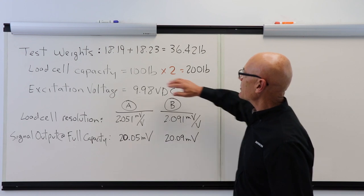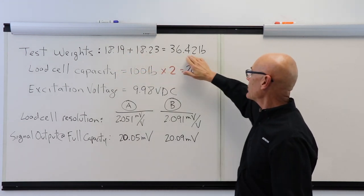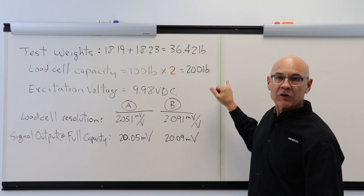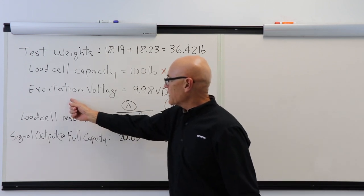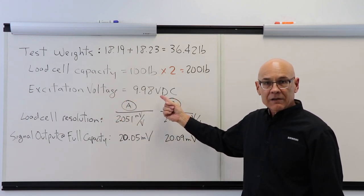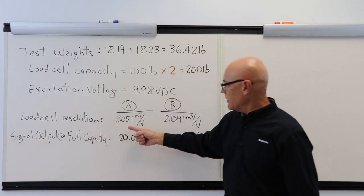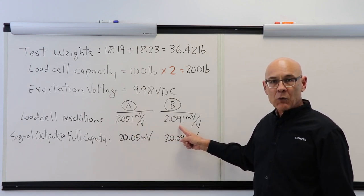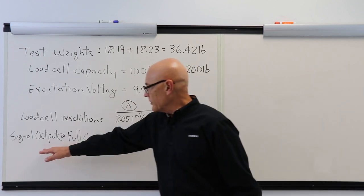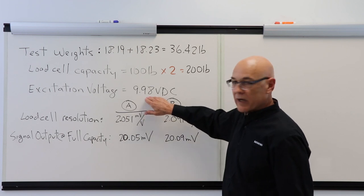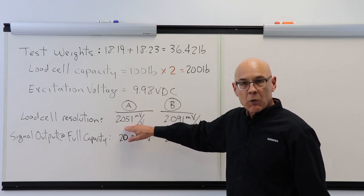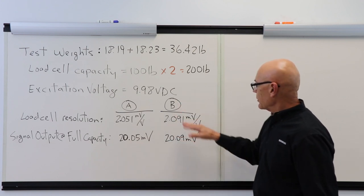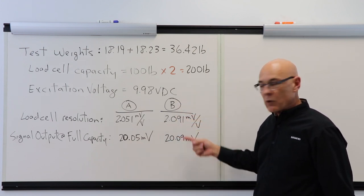Our test weights for this demonstration were 18.19 plus 18.23 pounds, 36.42 pounds total. Our load cell capacity was 100 pounds each for a total of 200 pound capacity for the weigh bridge. Our excitation voltage was 9.98 volt DC. From the nameplate of each load cell, the load cell resolution for load cell A was 2.051 millivolts per volt excitation, and for load cell B was 2.091 millivolts per volt excitation. So the signal output at full capacity based on 9.98 volt DC times 2.015 millivolts per volt excitation would be 20.05 millivolts for load cell A.